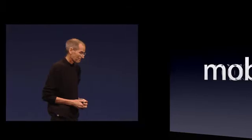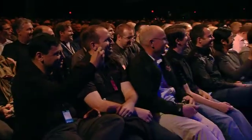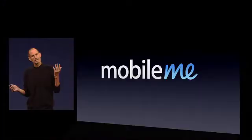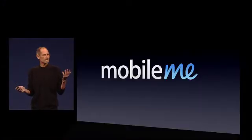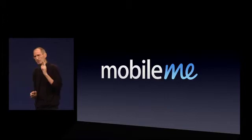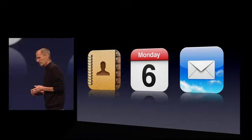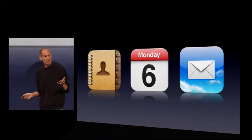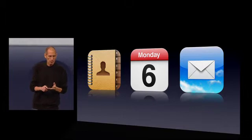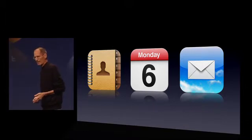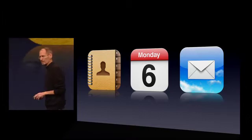Now, you might ask, why should I believe them? They're the ones that brought me MobileMe. It wasn't our finest hour, let me just say that, but we learned a lot. The three core apps in MobileMe were contacts, calendar, and mail — three things we'd obviously like kept up to date. We've thrown them away, re-architected, and rewritten them from the ground up to be iCloud apps, and we've put them on all of our devices.